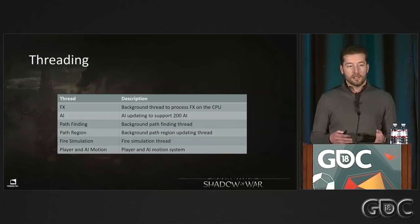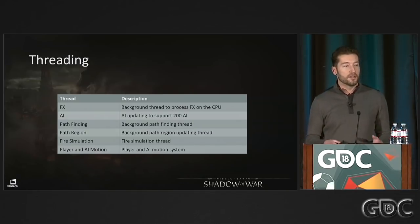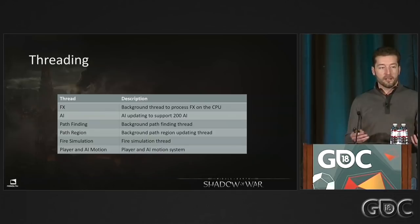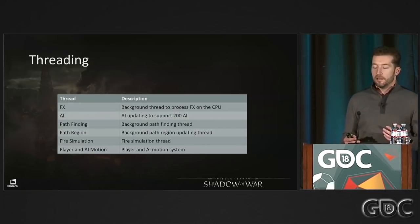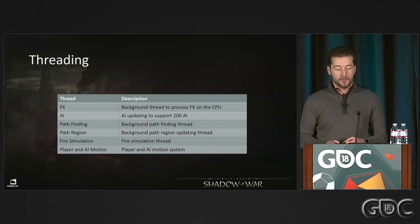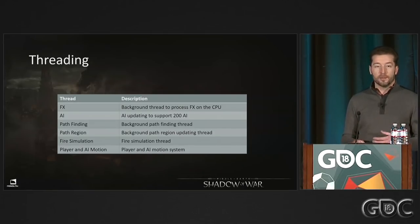Here are the major systems we threaded in Shadow of War that were not threaded in Shadow of Mordor: the effects system (went from 2ms to 20ms, had to be moved off the main simulation thread); AI logic (controlling 200 AI with full logic); pathfinding (200 AI pathing on a 3x bigger nav mesh); path regions (destruction carves nav mesh requiring updates); a new fire simulation added to Shadow of War; and player and AI motion, which became more complex and had to be pushed to a background thread.